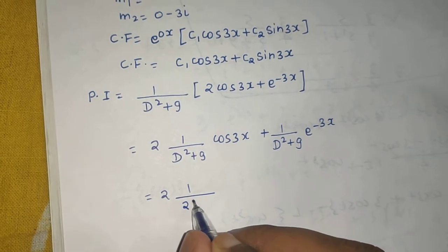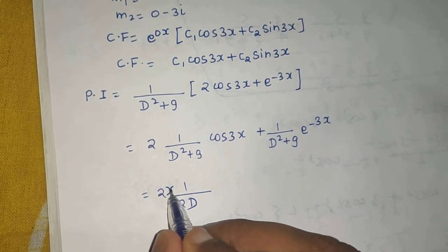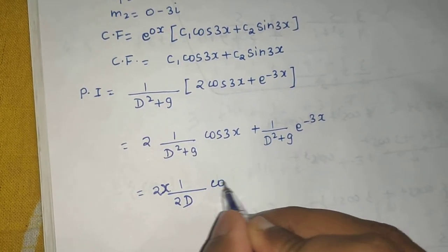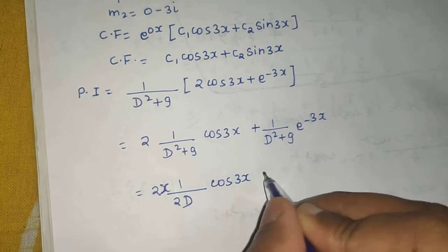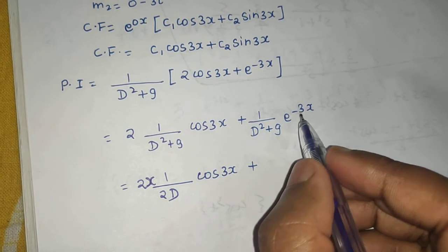So you will get 2D and multiply by an extra x. So multiply by x and differentiate the denominator and write this cos 3x.